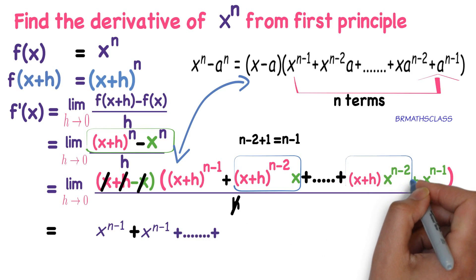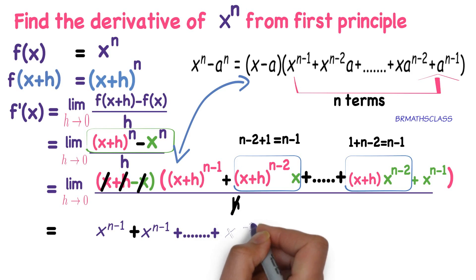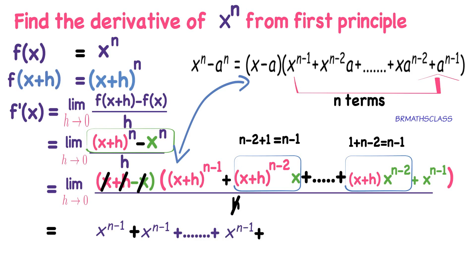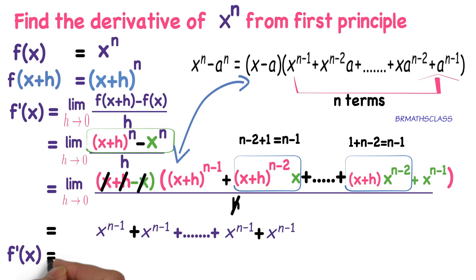So this expression will be x power n minus 1, plus and so on. In place of h you write 0 and you get x power 1 into x power n minus 2, which is the same as x power n minus 1. Plus what is the last term? x power n minus 1. How many x power n minus 1 are there? There are n. So what is f dash of x? f dash of x is n into x power n minus 1. So the conclusion is: the derivative of x power n is n into x power n minus 1.